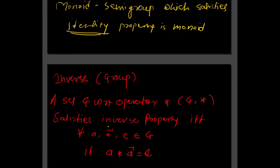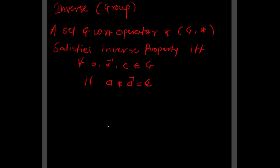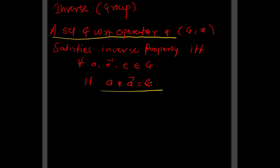A group is a monoid that satisfies the inverse property. The inverse property states: a set G with operator star — (G, star) — satisfies the inverse property if elements a, a-inverse, and e all belong to set G, and the operation a star a-inverse gives you the identity element e.